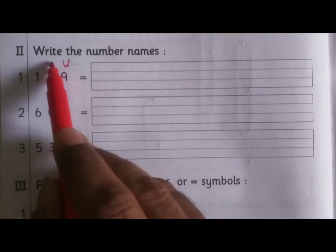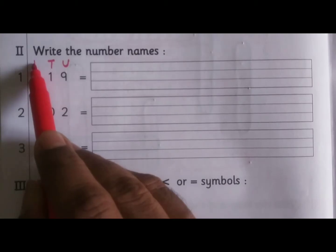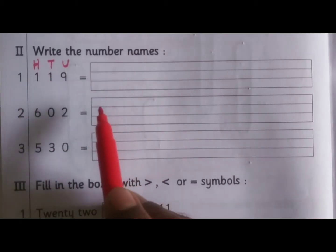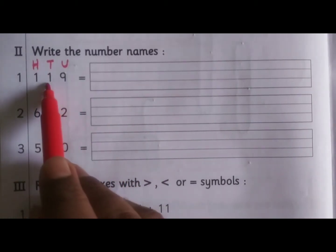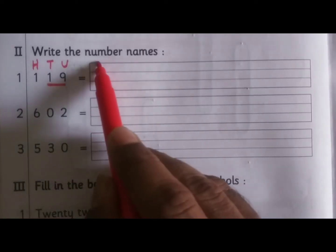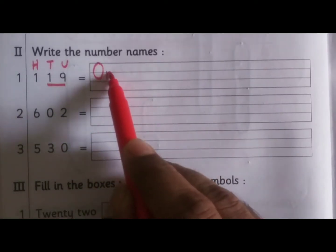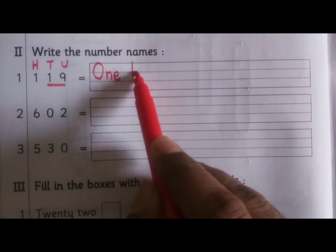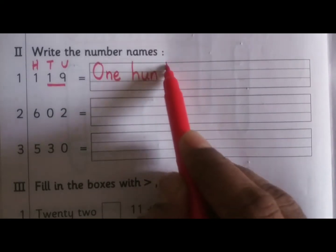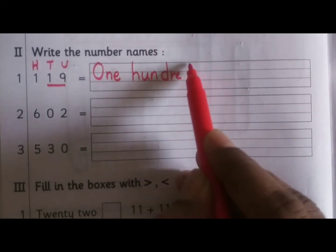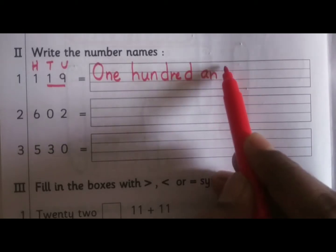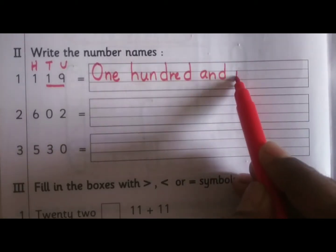Write the places, hundreds and tens. It will help you to read easily: one hundred and nineteen. So write the spelling: one hundred and nineteen.